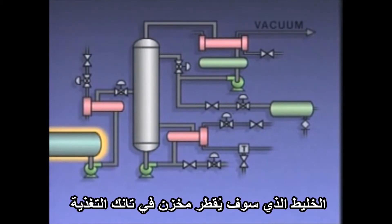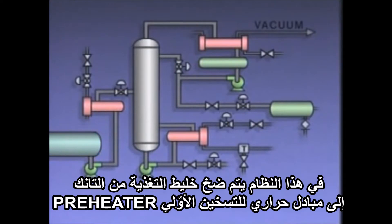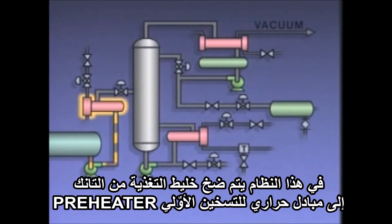The mixture to be distilled is contained in this feed tank. In this system, the feed mixture is pumped from the tank to a preheater where its temperature is raised close to the boiling point of the lighter component in the mixture.